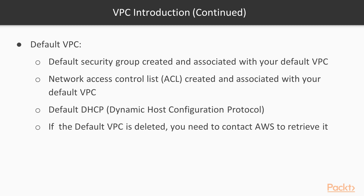A default DHCP, or Dynamic Host Configuration Protocol, options set for your AWS account is associated with the default VPC, specifying the Amazon-provided DNS for instances and resources. If the default VPC is deleted, the only way to retrieve it is by contacting AWS — there is no other way. So it's best practice not to delete it.